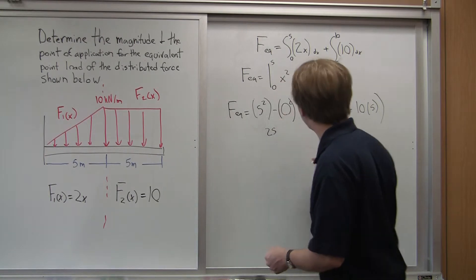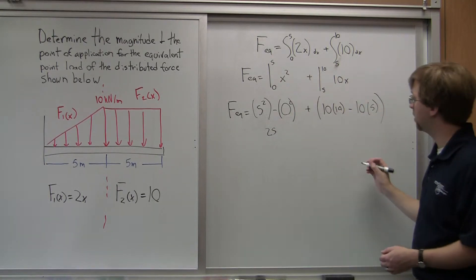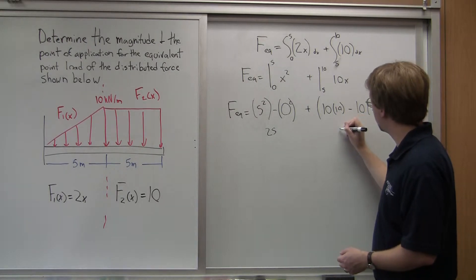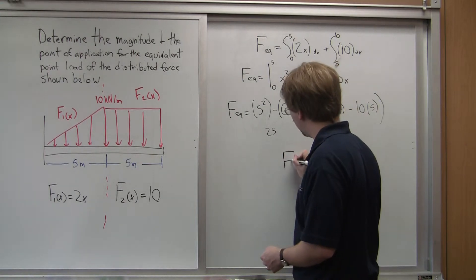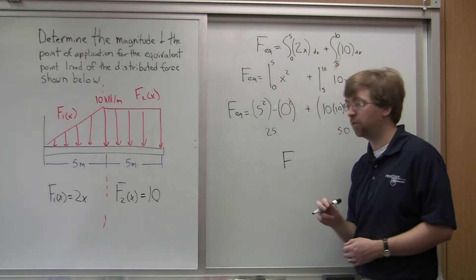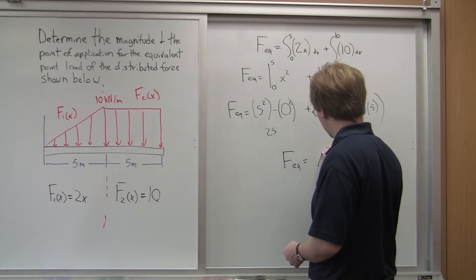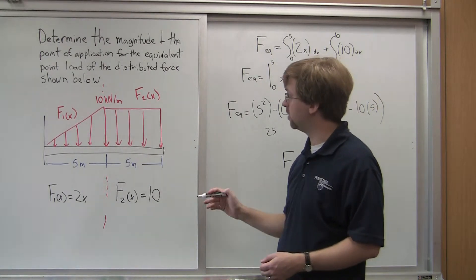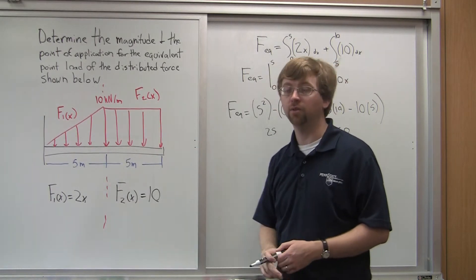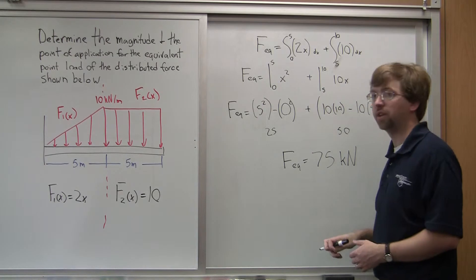This gives me 25 over here; ten times ten is one hundred, minus five times ten is fifty, so that's another fifty. So the magnitude of my equivalent point load is equal to seventy-five. Looking back at my original scenario, this is given in kilonewtons, so this is seventy-five kilonewtons.